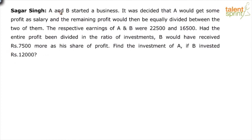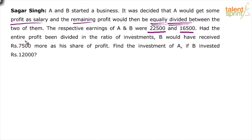The question is on partnership between two persons A and B. A would get some profit as salary, and then the remaining profit would be divided equally between the two of them after giving some part as salary to A. The respective earnings of A and B come out to be 22,500 and 16,500. Focus on the words: had the entire profit been divided in the ratio of their investments, B would have received 7,500 more.